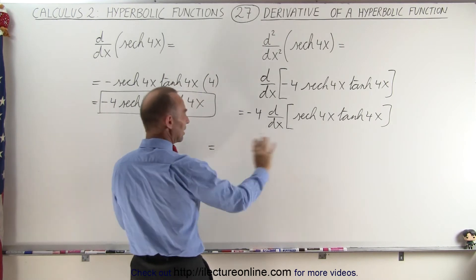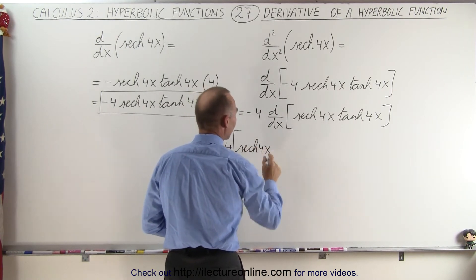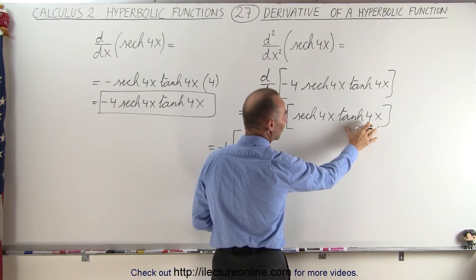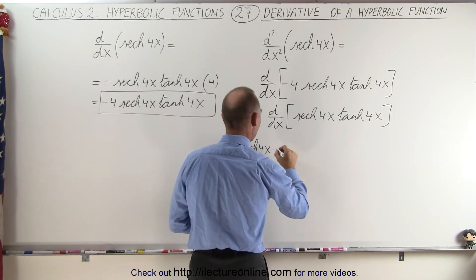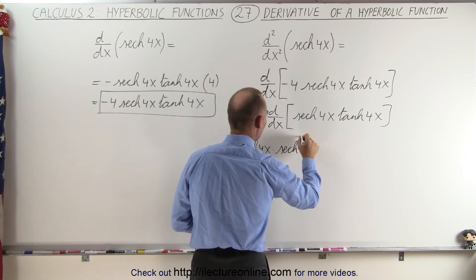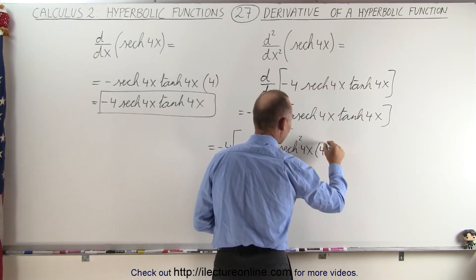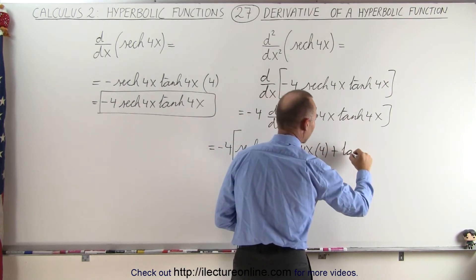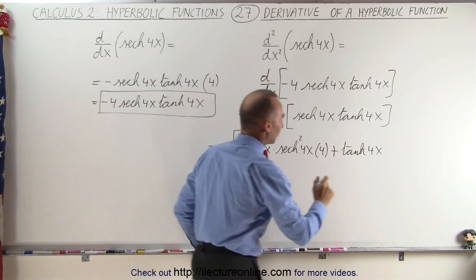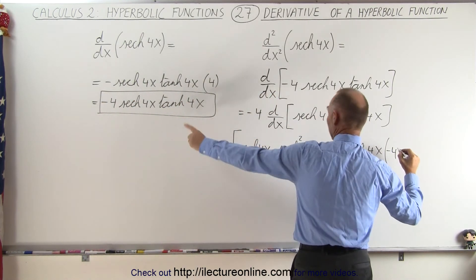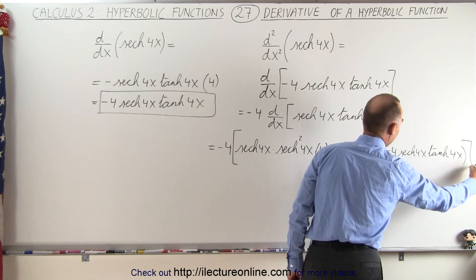Applying the product rule, we take the first function, hyperbolic secant of 4x, times the derivative of the second. The derivative of the hyperbolic tangent is hyperbolic secant squared, giving us hyperbolic secant squared of 4x, multiplied by 4 from the chain rule. Then we add the second function, hyperbolic tangent of 4x, times the derivative of the first, which is minus 4 times hyperbolic secant of 4x times hyperbolic tangent of 4x.